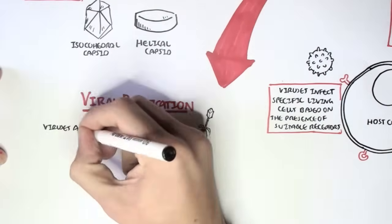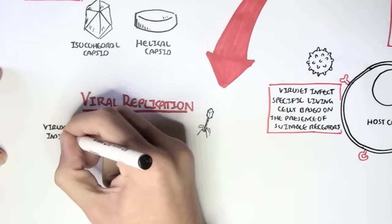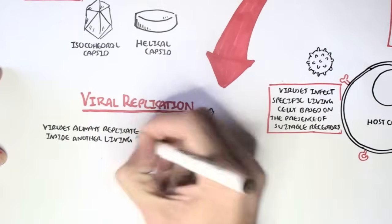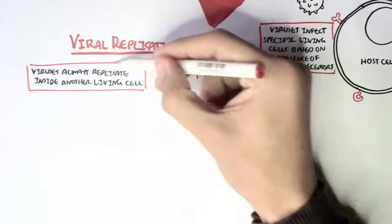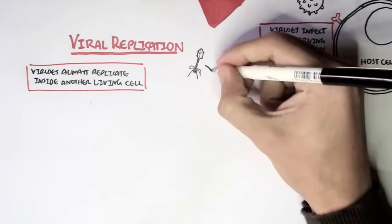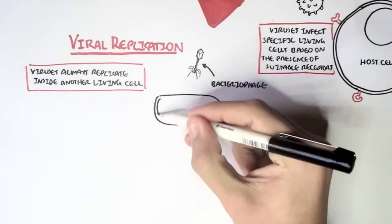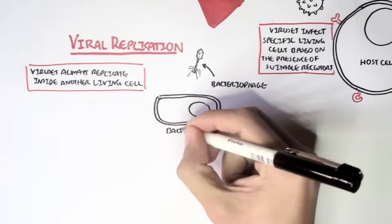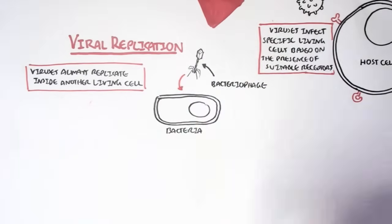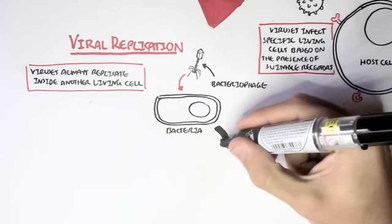We have to understand that all viruses, not only the bacteriophage, but all viruses always replicate inside another living cell. In this case, a bacteriophage will infect a living bacteria and will replicate inside the bacteria. And this will result in different pathways.